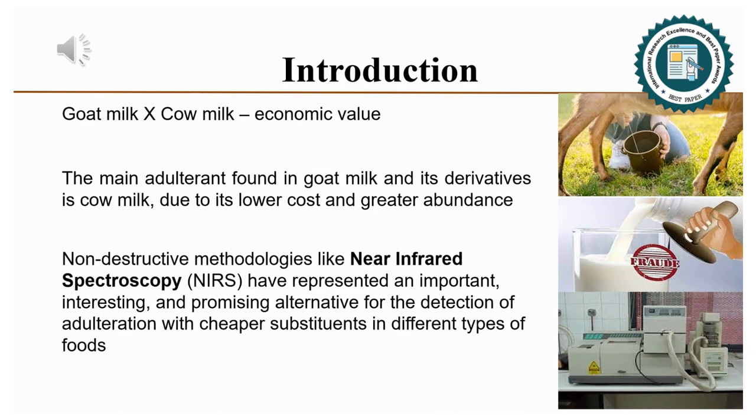From the economic point of view, goat milk is more expensive than cow milk and consequently its derivatives have a higher added value. Thus, driven by this economic representativeness, adulteration of this food type is a reality. The main adulterant found in goat milk and its derivatives is cow milk, due to its lower cost and greater abundance.